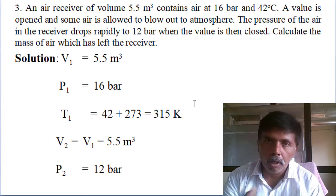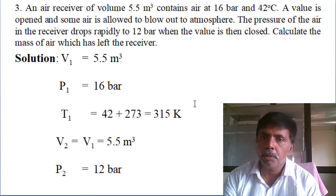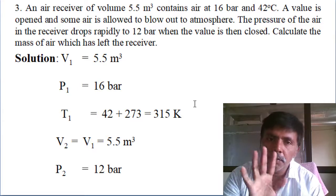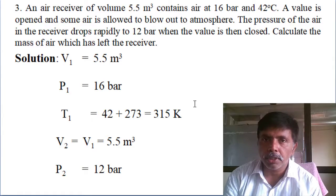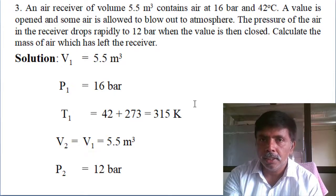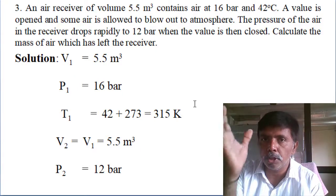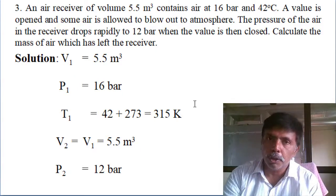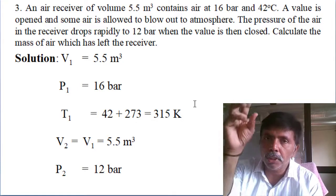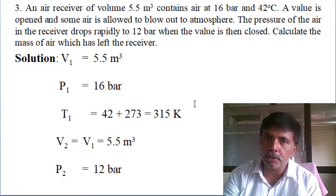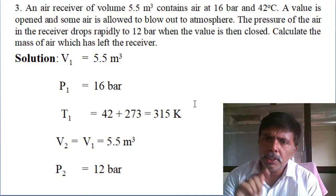This is similar to what happens at a puncture shop — a compressor fills air in the receiver. When the pressure reaches a set limit, say 5 bar, the compressor cuts off. When we use air to fill tires, the receiver pressure drops. In this problem, the pressure drops rapidly to 12 bar, and when the valve is closed, we need to calculate the mass of air that has left the receiver.